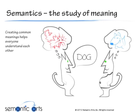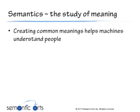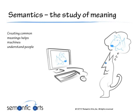Common meaning also helps humans and machines understand each other better. It helps a computer accurately interpret what people mean because they share a specific definition.